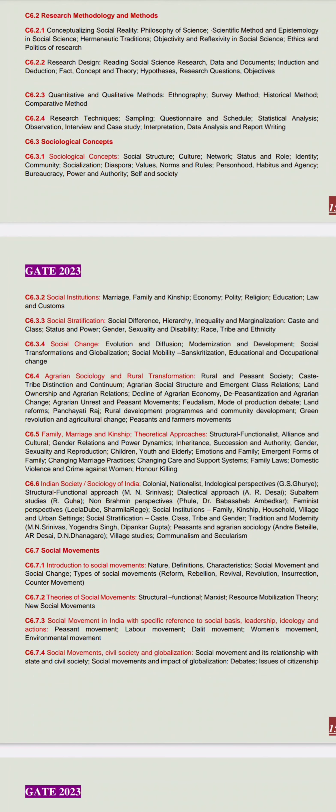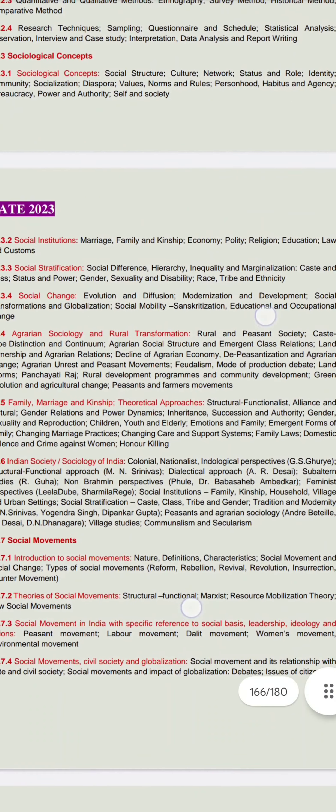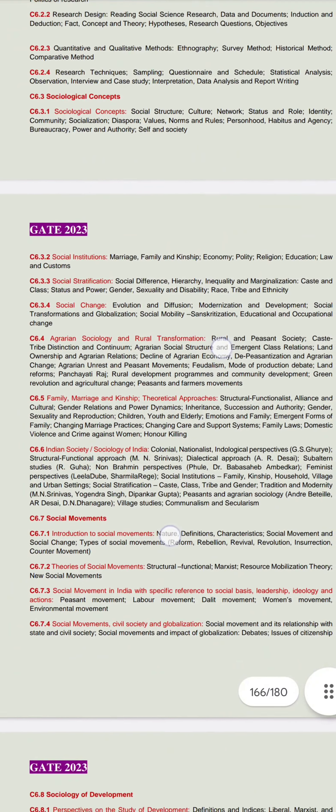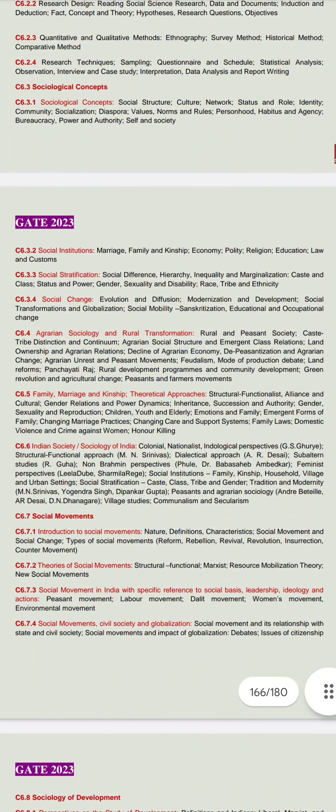Then we have the fifth unit covering the whole family, marriage, kinship concept — alliance theory, descent theory, gender relations, power dynamics, succession and authority, society concept, gender, sexuality, and reproduction. These are all part of the fifth unit.